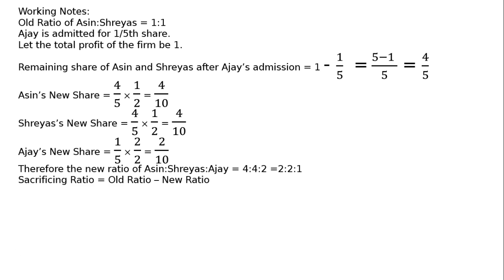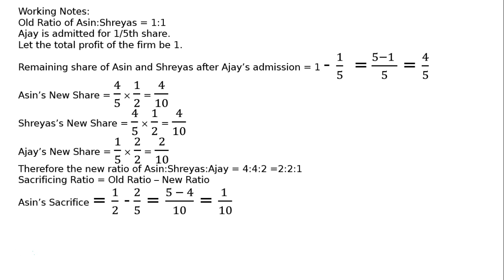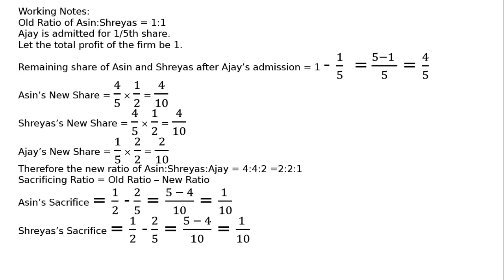Sacrificing ratio is equal to old ratio minus new ratio. Ashin's sacrifice: old share is 1/2 minus new share 2/5, which equals 5 minus 4 upon 10, that is 1/10. Likewise, Shreyas's sacrifice is also 1/10. Therefore, the sacrificing ratio of Ashin to Shreyas is equal to 1:1.